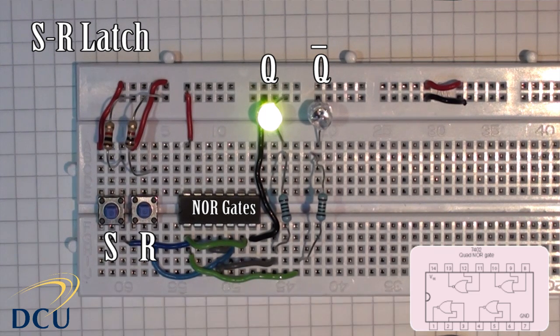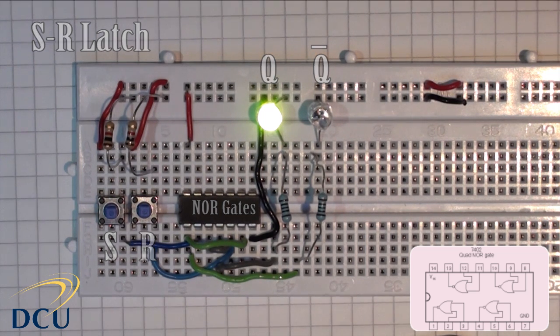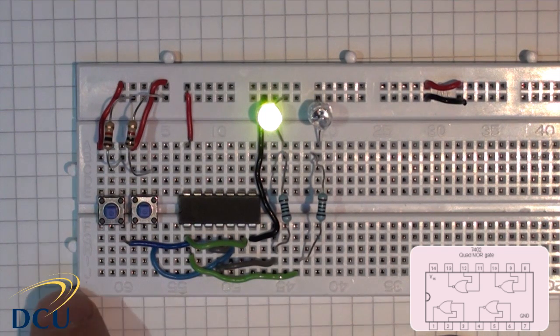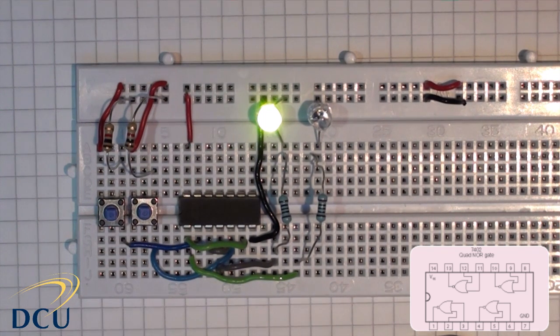Set is 1, 0. Reset is 0, 1. And latch, as we call it, is 0, 0. So that's our basic SR flip-flop, wired using two input NOR gates. And you can see that it's quite an interesting and useful circuit.